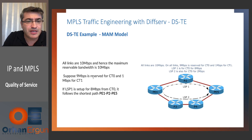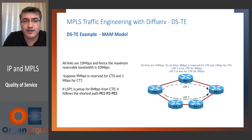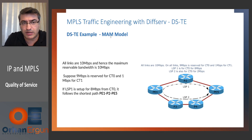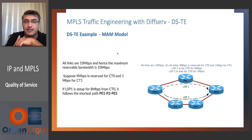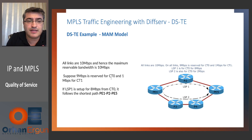Suppose 9 MB is reserved for CT0 and 1 MB for CT1. In maximum allocation model, 1 CT equals 1 BC — don't forget that, it's important. And in maximum allocation, CTs will not share the bandwidth. No sharing. That is the idea.